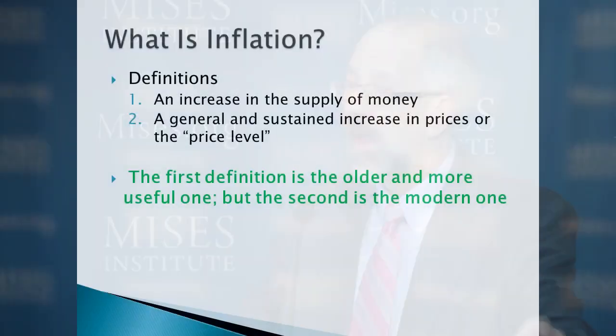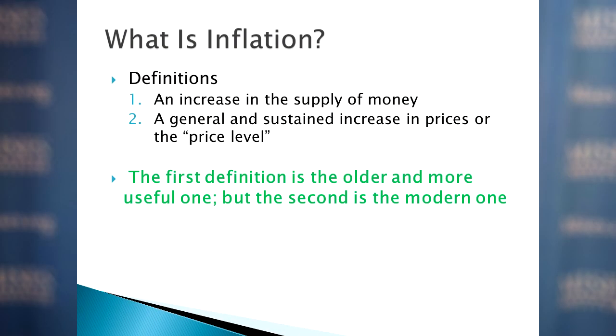What is inflation? It's an increase in the supply of money — that was the older definition up until about the 1930s, certainly in the 19th century. But today's definition is that it's a general and sustained increase in prices or the price level. I prefer the older definition; I think it's more useful. But we'll use the modern definition in this lecture, because that's the one used in most textbooks and in the media.